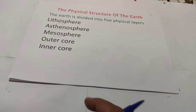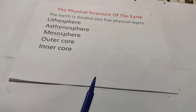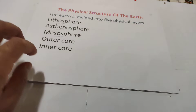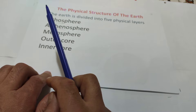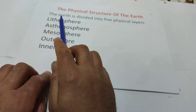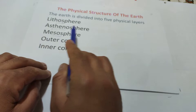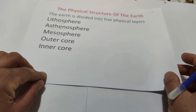We finish chemical composition of earth. Remember there are 3 layers: crust, mantle, and core. The crust is mostly made of oxygen, silicon, and aluminum. The mantle is mostly made of magnesium, with less silicon and oxygen. The core is made of iron and less nickel. Now, what about the physical structure of earth? The earth is divided into 5 physical layers: lithosphere, asthenosphere, mesosphere, outer core, and inner core.